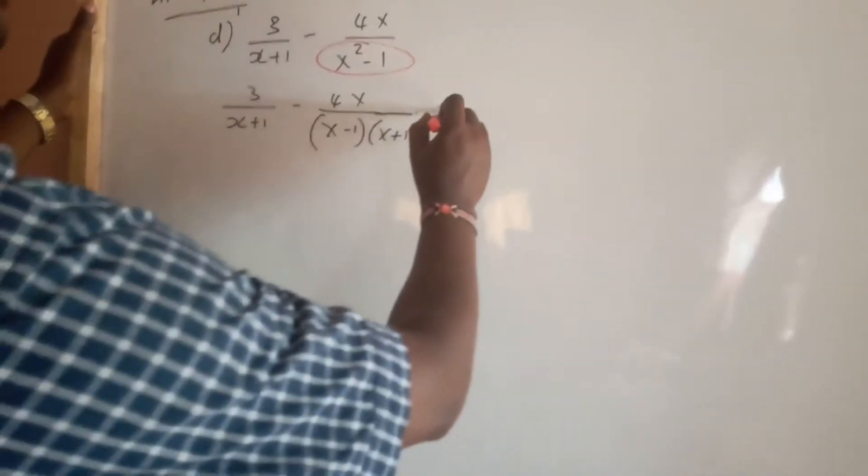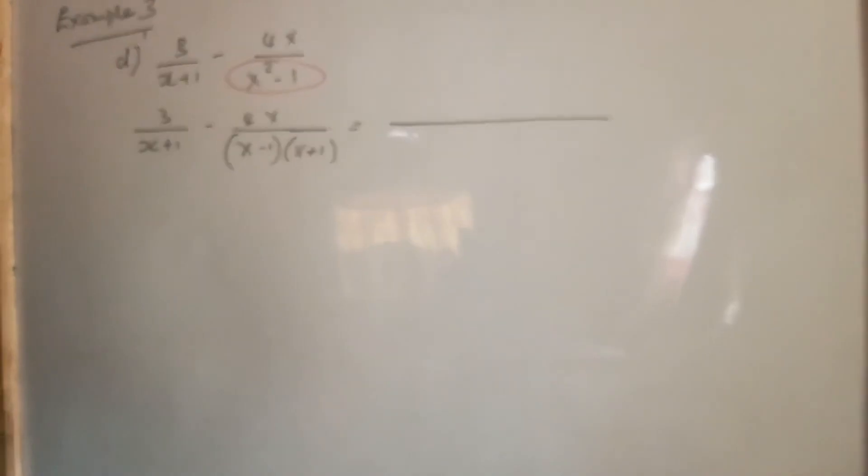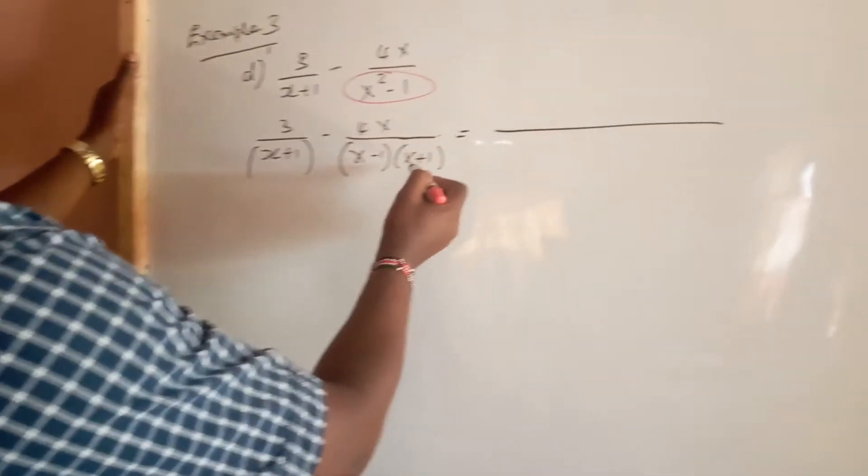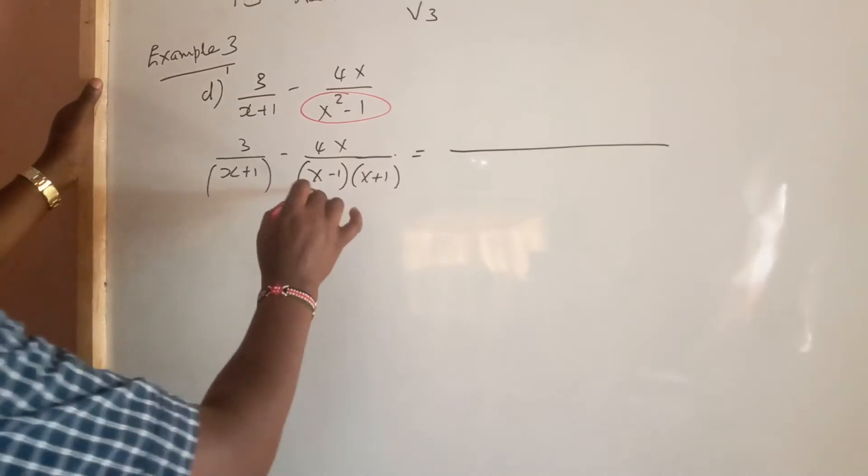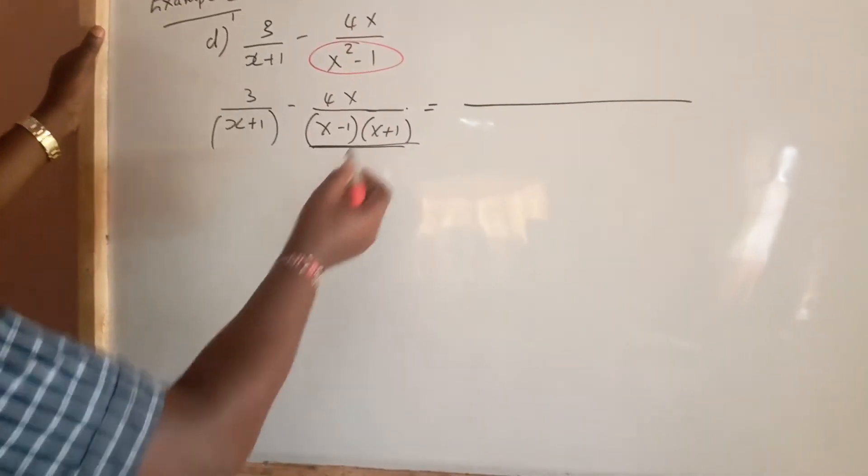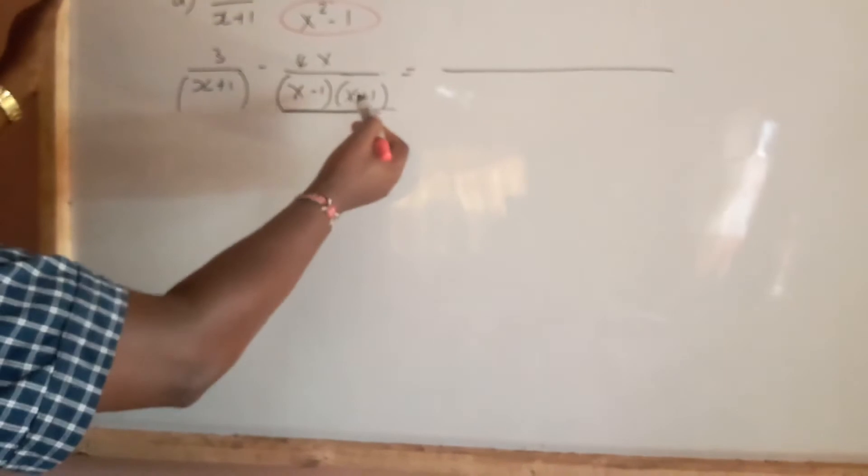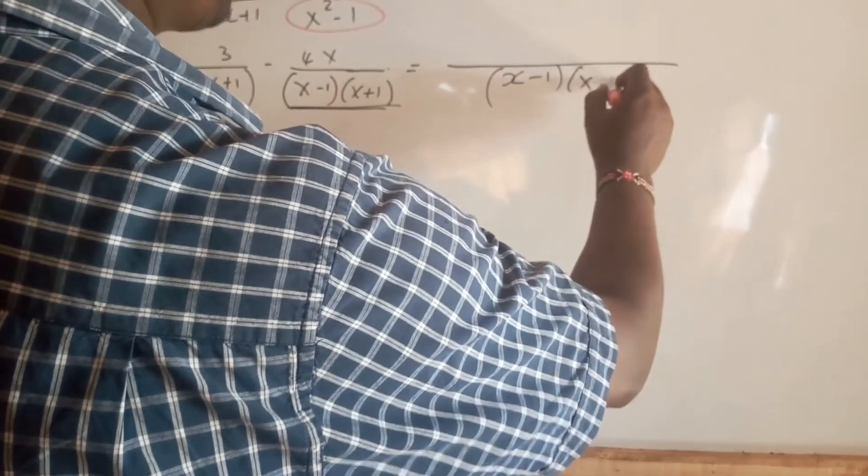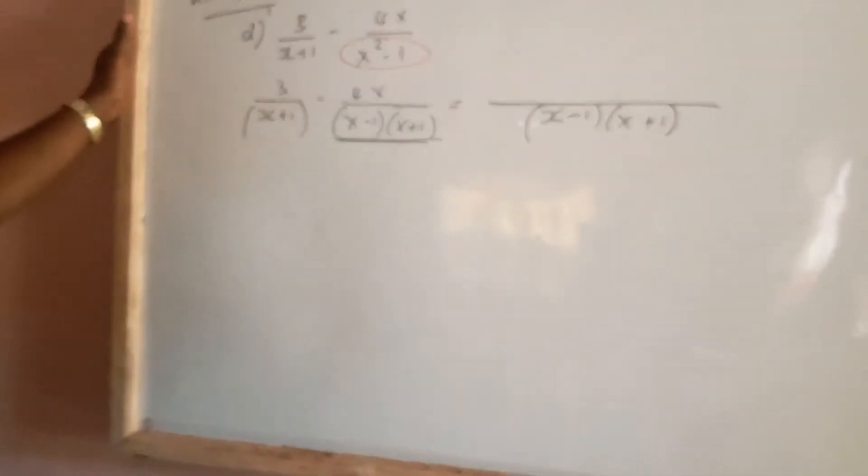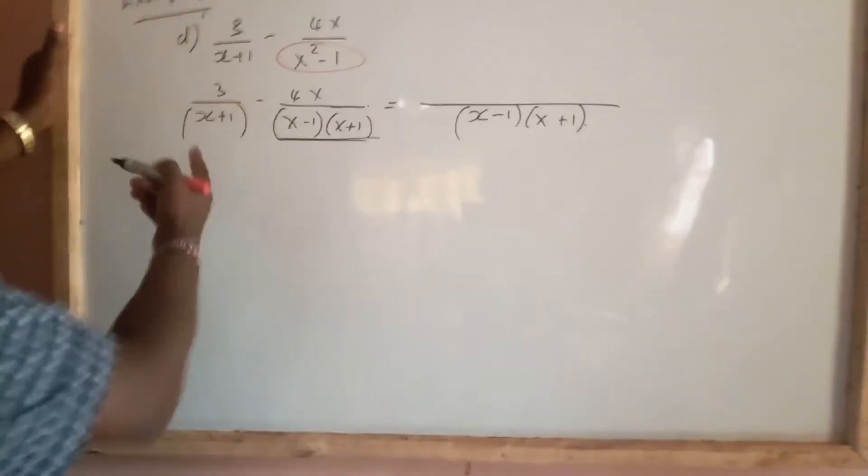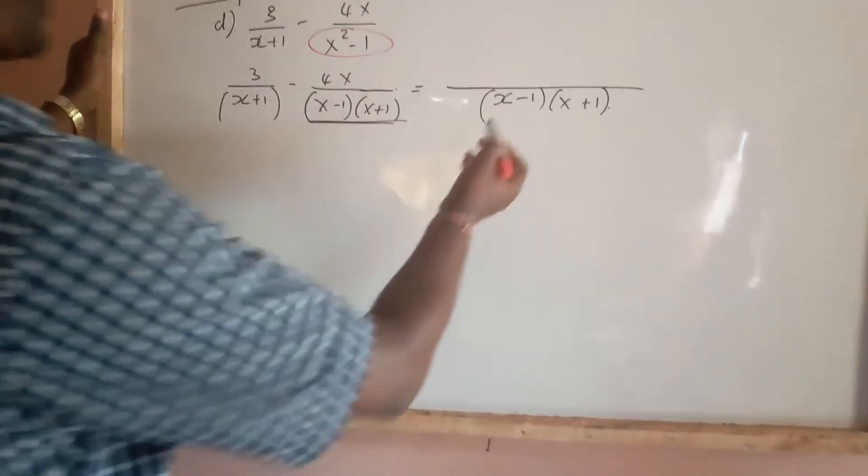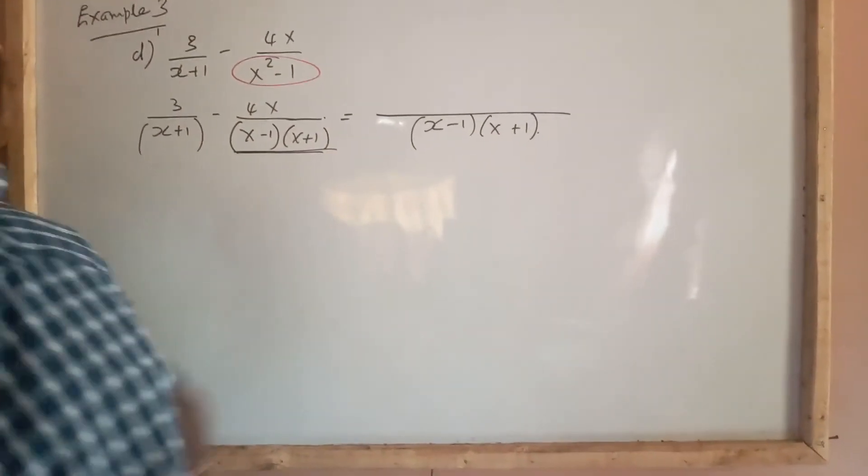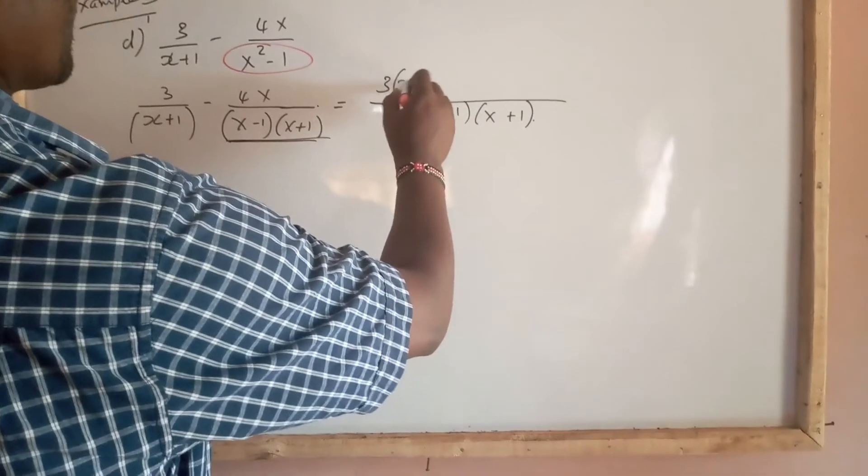Now that gives us a very clear LCM, because we can see (x+1) is represented in both terms. The LCM becomes (x-1)(x+1), because we cannot duplicate (x+1) when it's already represented. Divide by the first divisor, you get the other part. So (x-1)(x+1) divided by (x+1) gives (x-1). Multiplying by 3, we have 3(x-1).